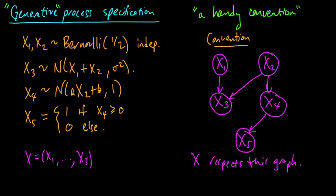The convention is that x respects this graph, and since x respects this graph, that implies x has certain conditional independence properties. Those conditional independence properties are not necessarily implied by these statements alone. For example, this graph implies that x3 and x4 are conditionally independent given x2. That might not be immediately obvious, but a little later on we're going to look at shortcuts for evaluating the conditional independence properties implied by a graphical model.